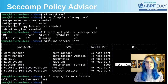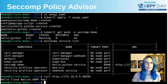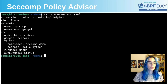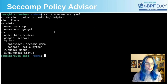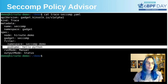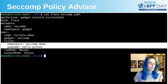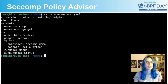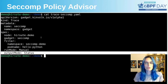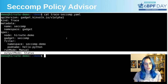Now let's see how we can use InspectorGadget to generate the necessary seccomp policy. To do that, we will use this trace resource that specifies the node, the pod name, and the namespace that we want to trace. For now, it says that the output mode is status, which means that the generated seccomp policy will be stored in the status of this same trace resource.